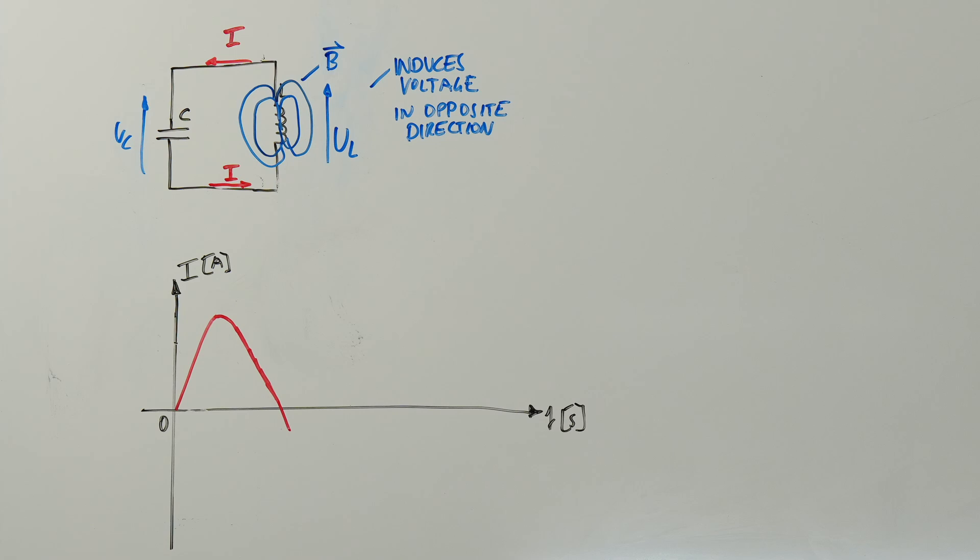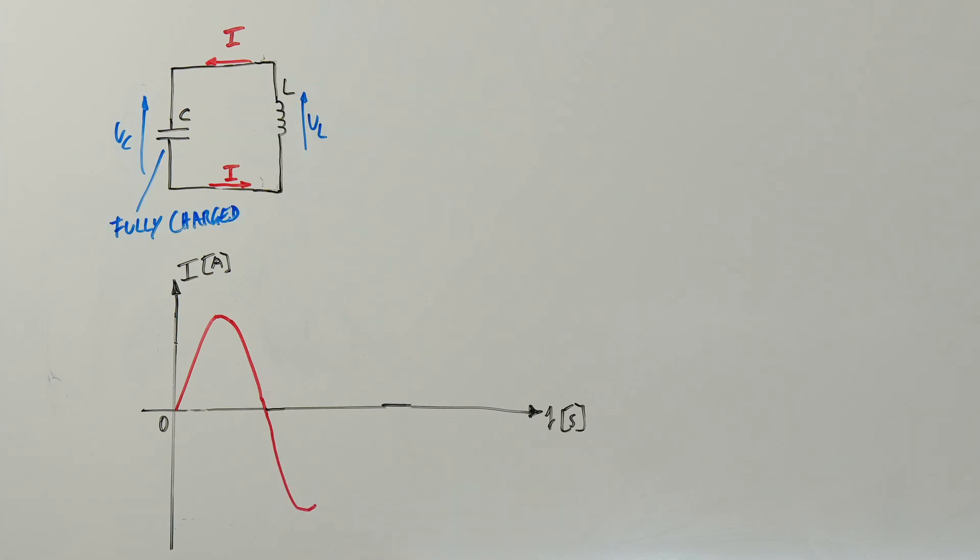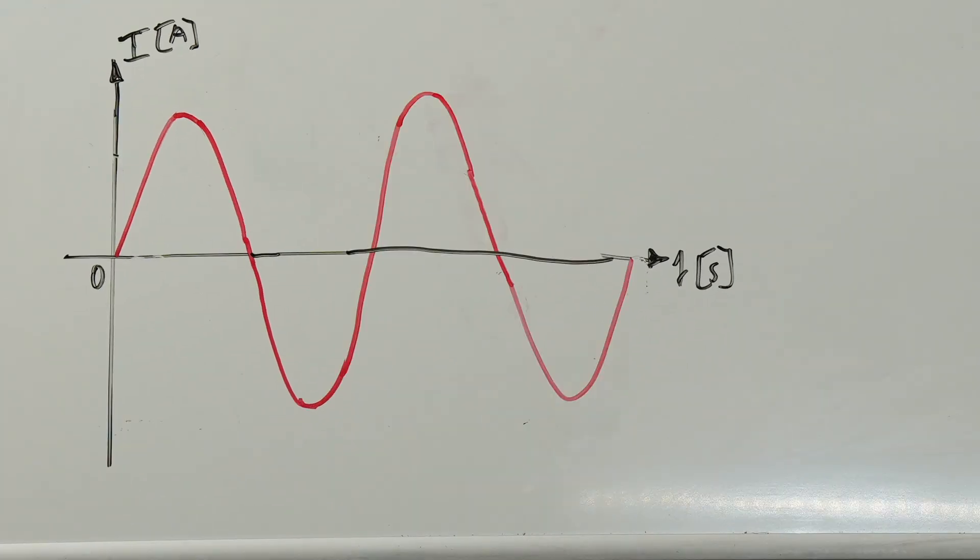However, this time the inductor resists the current decrease and induces a voltage and current that wants to keep the flow going. The inductor pushes current into the capacitor and charges it again but in reverse polarity. Consequentially, the current flow is in the reverse direction for the next half. The cycle begins again and the current of an LC circuit takes the shape of a sine wave.